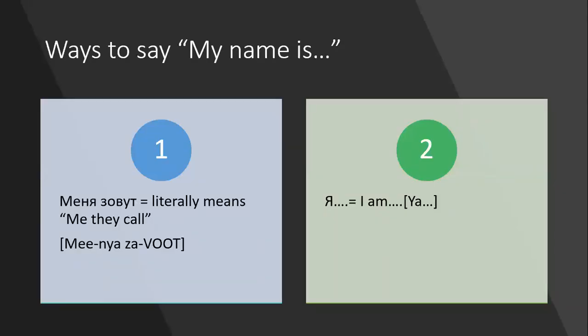How do you say my name is? You can say меня зовут, which literally means me they call. And you can say я Michael, я John, я Natasha, whatever your name is. Very simple. It means I am.